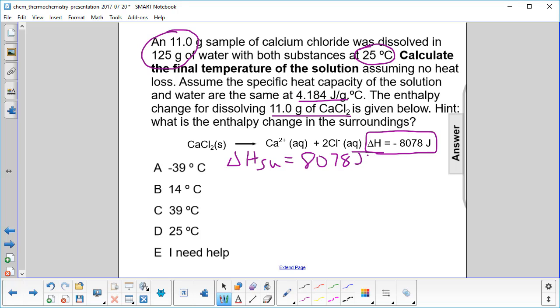Now let's go to our equation, that is MC delta T. We're interested in finding delta T, so delta T will be delta H of the surroundings, just do a little algebra here, divided by MC.